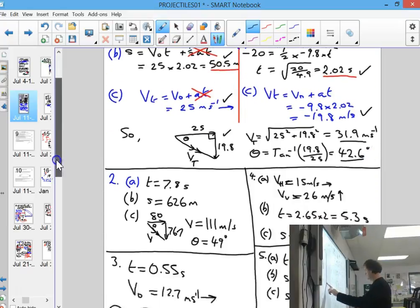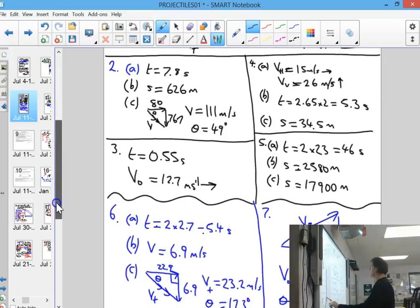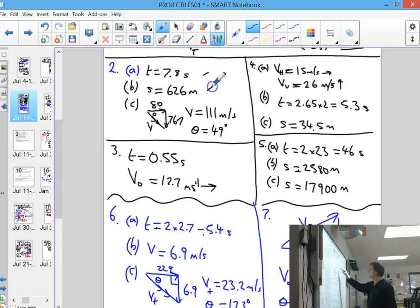For part two, the answers are listed here. Part three answers: I went and found the time in the vertical area, and then went backwards into the horizontal and found the initial velocities.